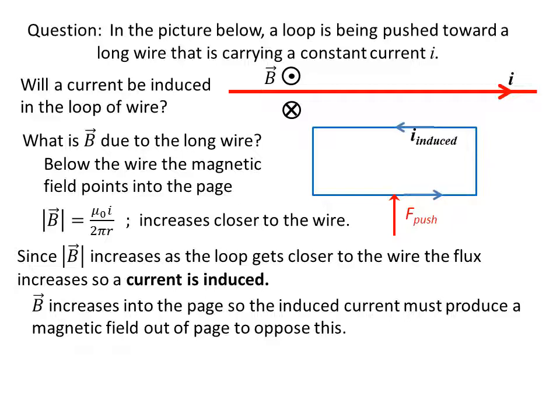That means there's a current going counterclockwise around the loop. If you wrap your fingers counterclockwise around the loop, your thumb will point out of the page.